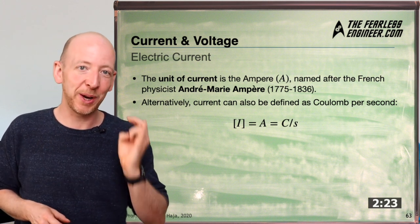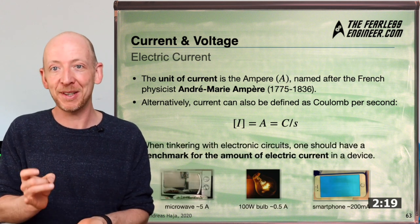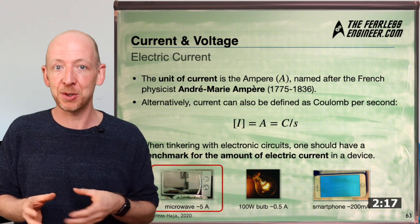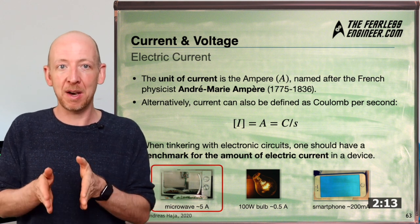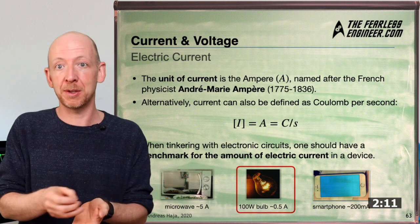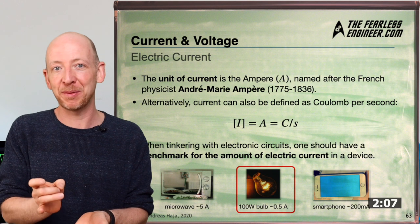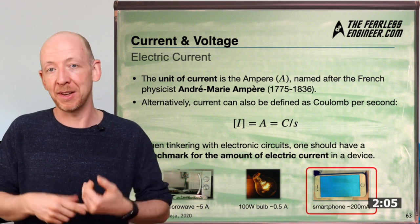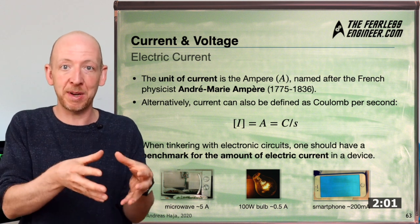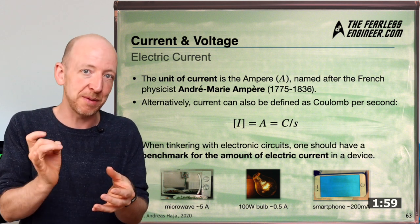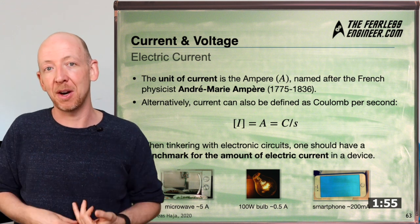Let's take a quick look at some typical current values in household devices. A typical microwave oven draws about five amperes. A 100 watt light bulb draws around half an amp at 230 volts, and a typical smartphone draws around 200 milliamps, that is 0.2 amps. So between smartphones and microwaves there is a factor of 25, which gives you a first idea of the range of currents you typically find in a household.